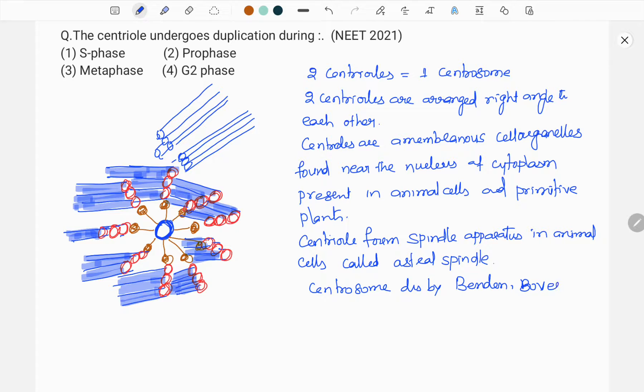One more thing is that this centrosome, it is discovered by Benden and Bavari. And this centriole duplication takes place during S phase. Remember centrioles and centrosome both are same. Usually every animal cell contains one centrosome. This centrosome undergoes duplication during the S phase, synthetic phase of the interphase.